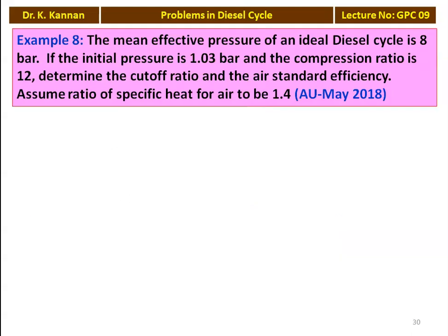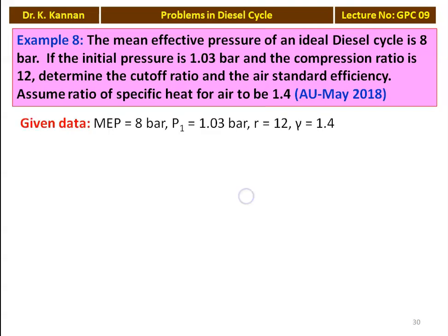Example number 8 from the May 2018 question paper: the mean effective pressure of the ideal Diesel cycle is 8 bar, the initial pressure is 1.03 bar, and the compression ratio is 12. Determine the cutoff ratio and the air standard efficiency. Assume the ratio of specific heats of air is 1.4. Given data: MEP equals 8 bar, P1 equals 1.03 bar, R equals 12, and gamma equals 1.4.